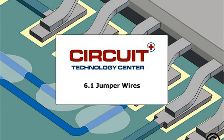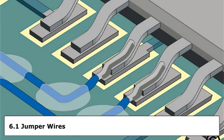This procedure covers the repair and modification of printed boards and electronic assemblies by the use of jumper wires to complete electrical continuity between two points. This procedure is meant to provide a foundation for adding jumper wires during the repair or modification process. The techniques and guidelines are based on general commercial and industry practices.